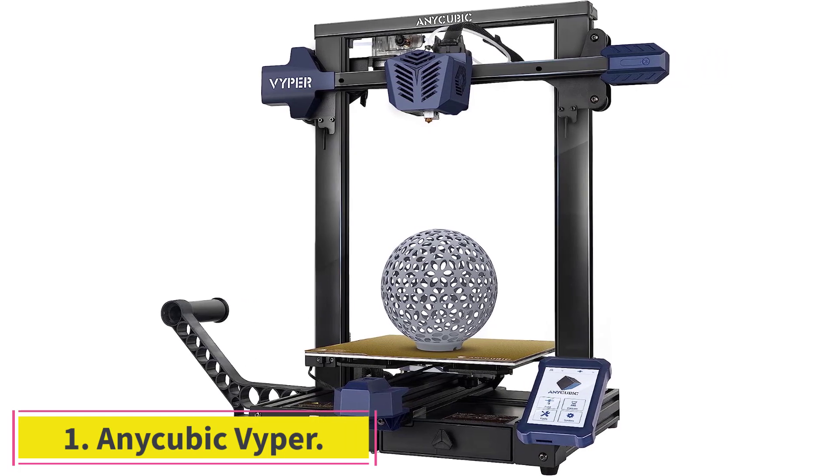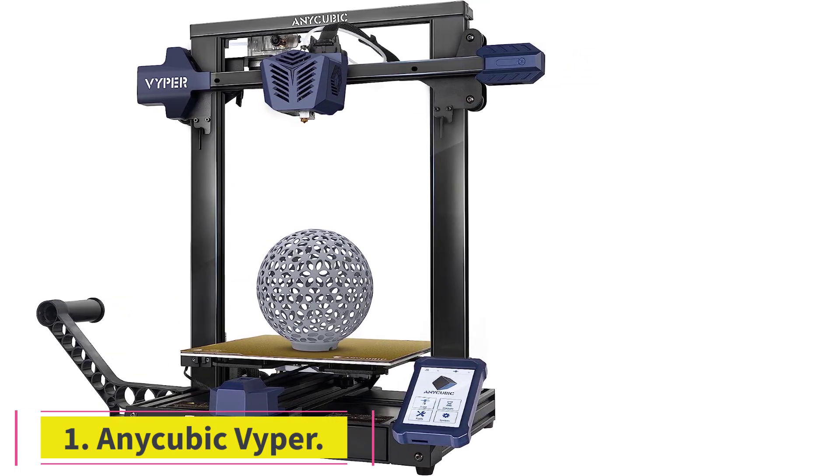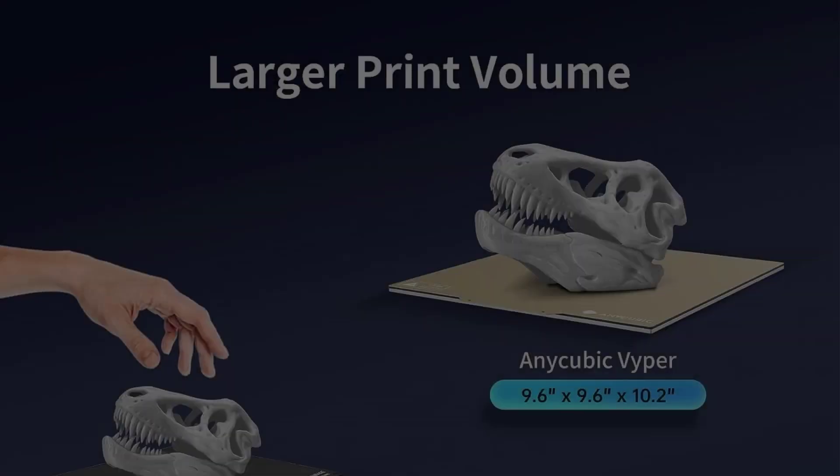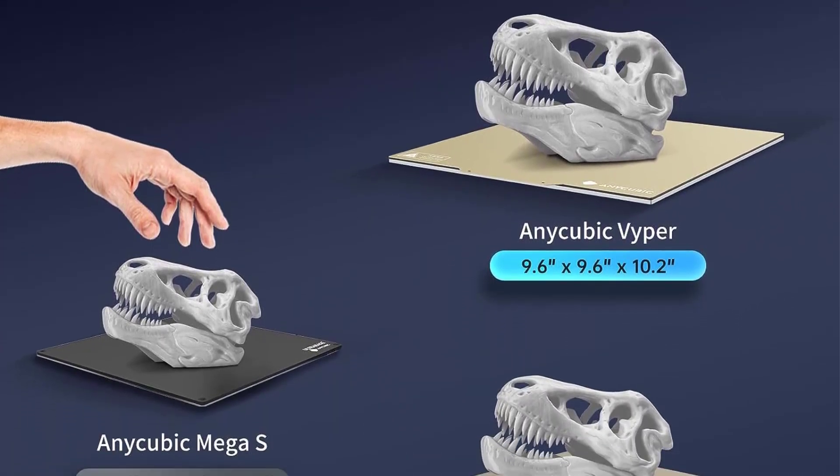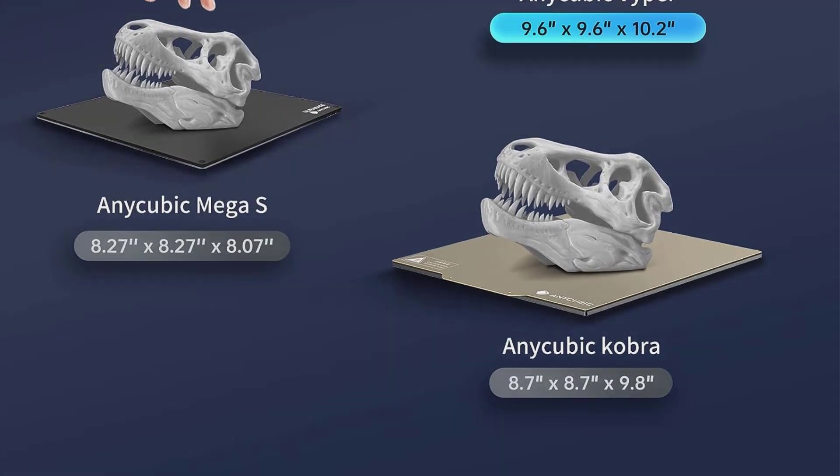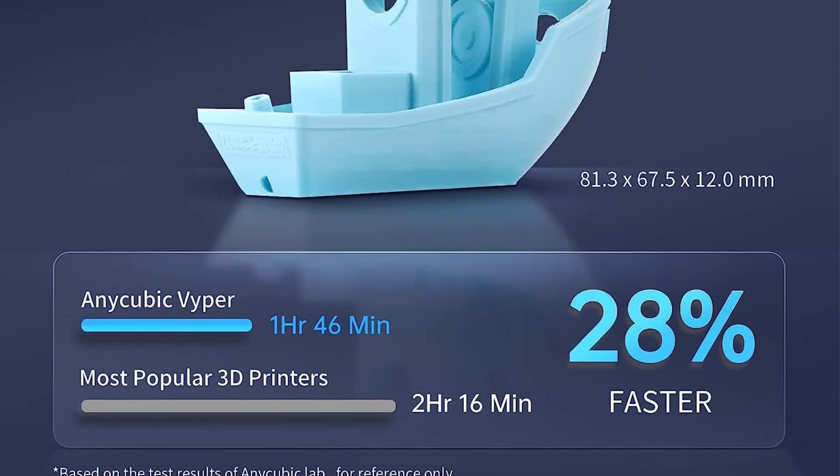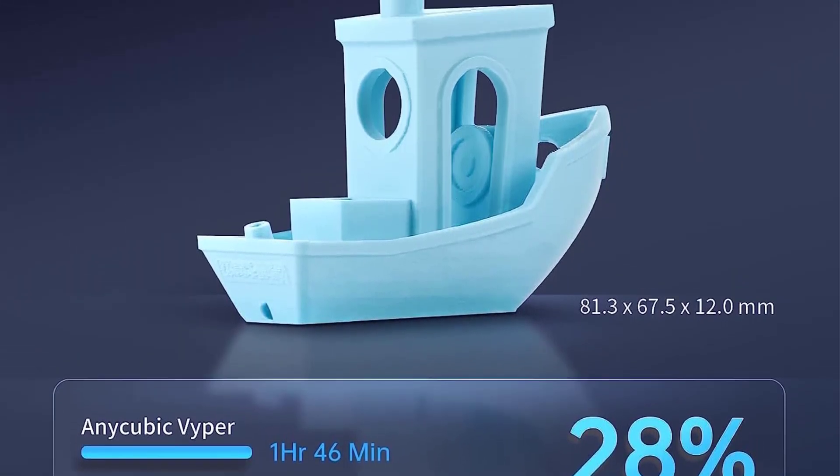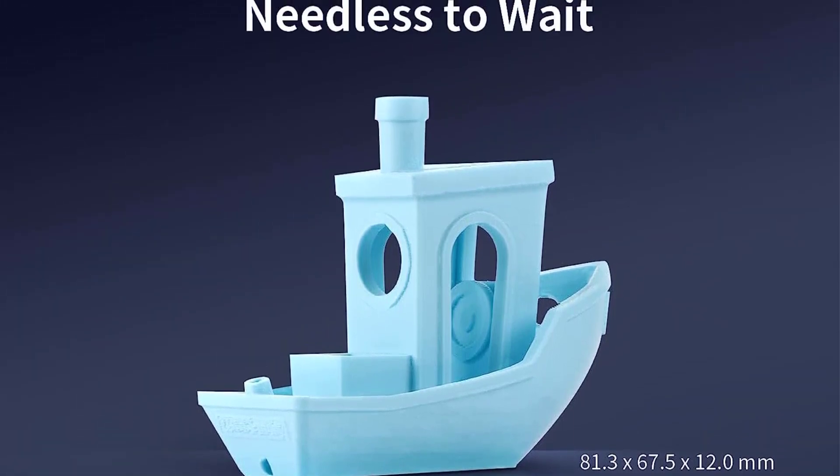Starting at number one, Anycubic Viper. Tech Advisor says this one meets the mark. It ticks all the right boxes: proper auto leveling, a touch screen, a PEI sheet, and a decent build volume of 240 by 240 by 265 millimeters. It's easy to assemble, prints reliably, and offers good quality with minimal tweaking.